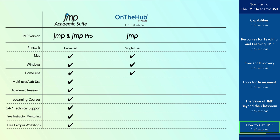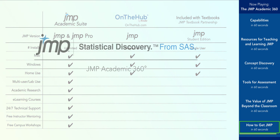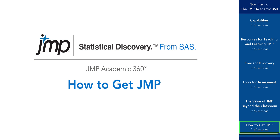Six-month and one-year licenses are available to students at 98% off the commercial price. Many introductory textbooks can be bundled for free with JMP Student Edition, a streamlined version of JMP with features appropriate for a first or second course in statistics. No matter how your class is taught, there is an easy and affordable way for your students to get access to JMP.